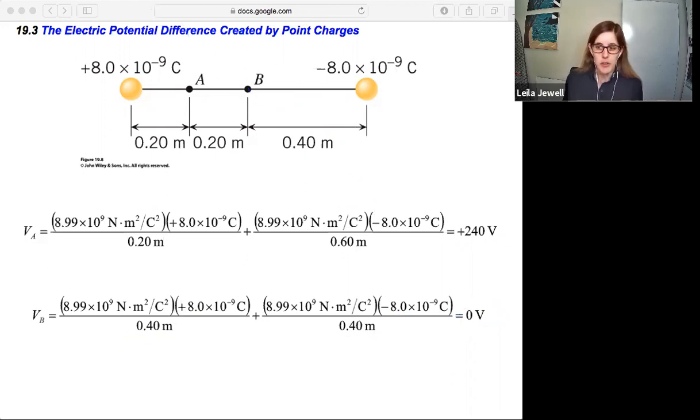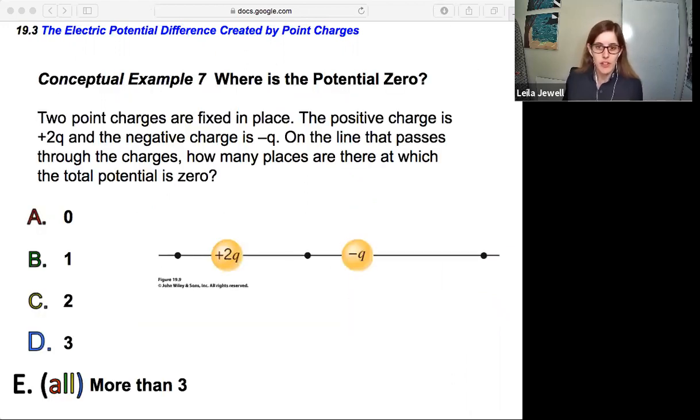Now that we've seen this zero point, let's look at one more example, a conceptual example of where's the potential zero. So two point charges are fixed in place. The positive charge is plus 2q and the negative charge is negative q. On the line that passes through the charges, how many places are there at which the total potential is zero? So I want you to think about this, come up with an answer, A, B, C, D, or E, before you move on. So go ahead, pause the video now.